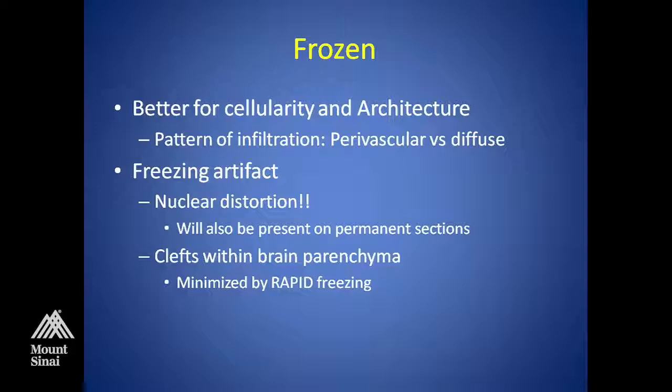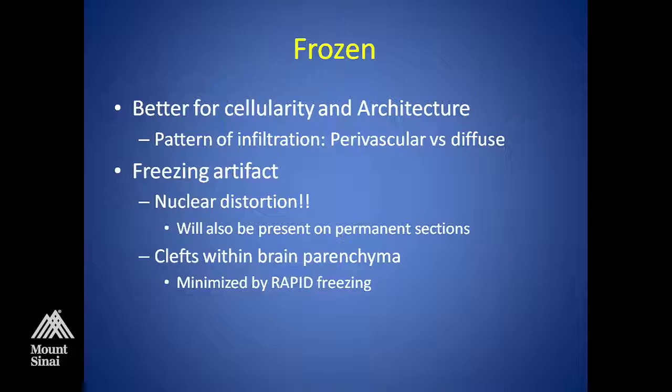Frozen sections, on the other hand, are typically better for assessing cellularity and architecture of the tissue and pattern of infiltration — whether the cells are predominantly in a perivascular arrangement, diffuse infiltration, or both. Freezing artifacts, however, present a problem. If the tissue is not frozen quickly, you get a lot of nuclear distortion and clefting of the brain parenchyma, which makes it difficult to read.